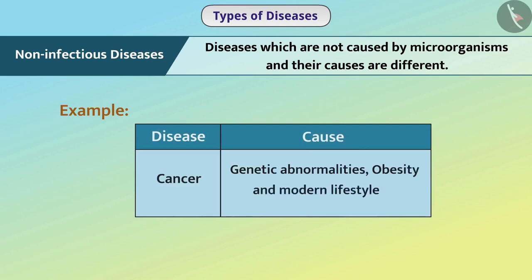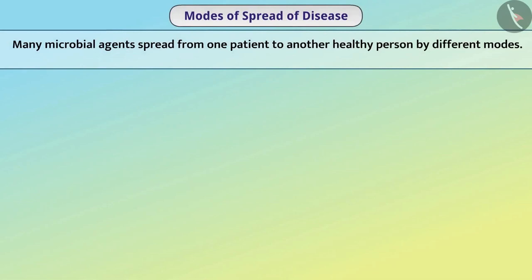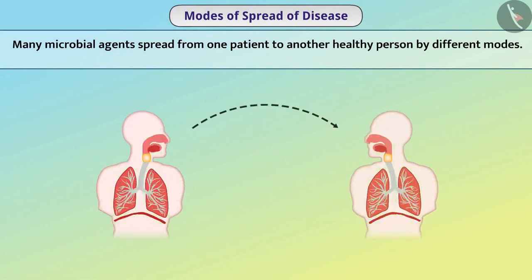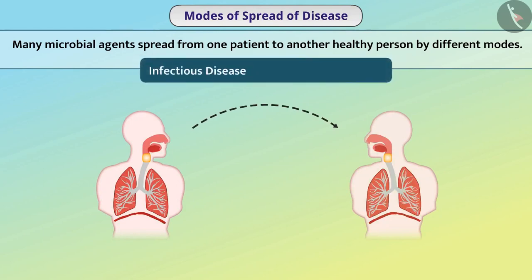Now let us understand the modes of spread of disease in detail. Many microbial agents spread from one patient to another healthy person by different modes. Therefore, infectious diseases are also called communicable diseases.